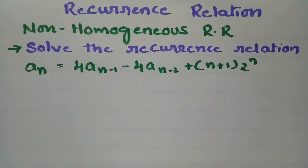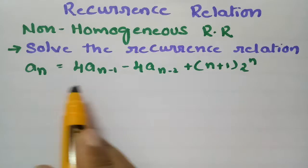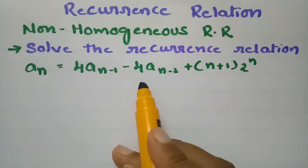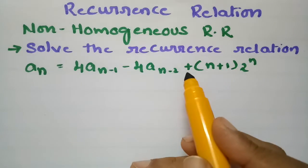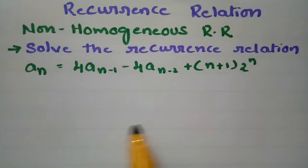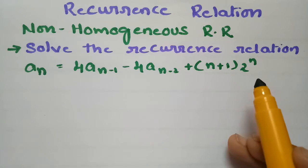Today's video I am going to explain a problem on non-homogeneous recurrence relation. This topic is related to discrete mathematics. The recurrence relation is: An = 4·An-1 − 4·An-2 + (N+1)·2^N. Since there is an RHS part, we say that this is a non-homogeneous recurrence relation.